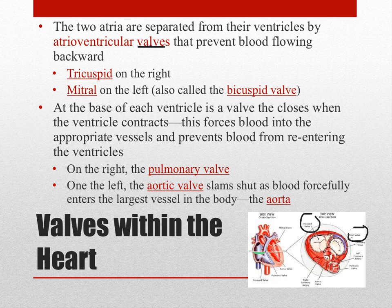There is another set of valves at the end of the ventricles before blood actually leaves the heart. On the right is the pulmonary valve, and on the left is the aortic valve. These valves work the same way: as blood moves out of the ventricles, the valves open so blood can leave, and when the blood is gone from the ventricles, the valves shut and wait for the next pumping cycle.